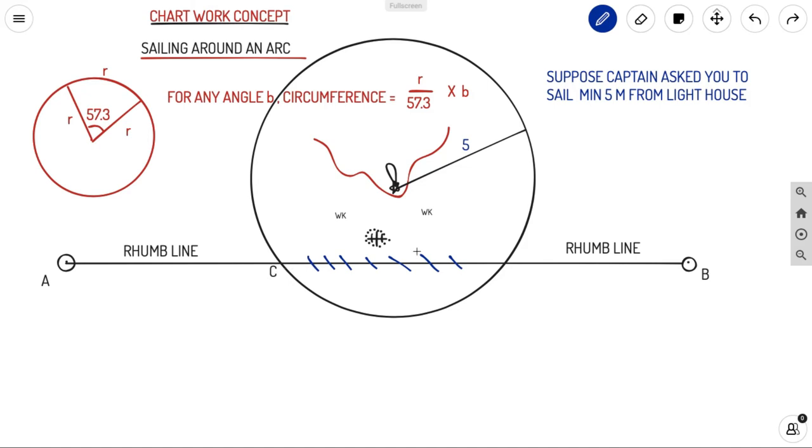Suppose this point is C and this point is D. The total distance will be A to C, C to D (that is sailing around an arc), and D to B (that is rhumb line). Now let's join the lighthouse to D, that is also five miles (the radius), also to C, that is also five miles (the radius). And we measured the angle at the lighthouse between these two lines.